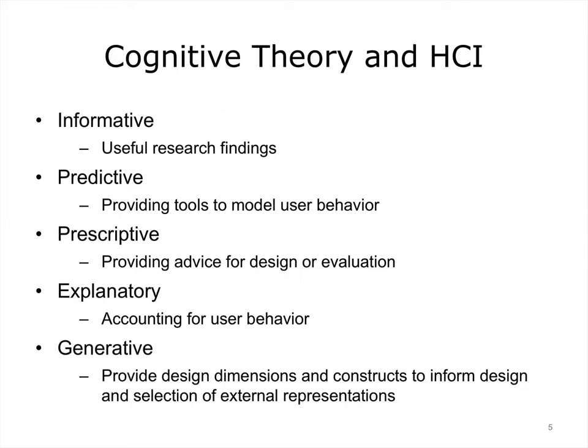What can cognitive theory do for HCI? Well, it can inform our understanding and it can be used to predict or explain end-user behavior in both general and more precise ways. For example, a general way would be a prediction that a given screen would exert a heavy memory load on any user because of its clutter and complexity. A more precise prediction might involve a model of a novice user performing a particular task, such as searching Google for treatment for migraines. Cognitive theory can also seed novel design concepts that may be a better match with users' mental models of the world.